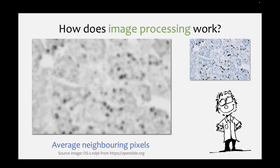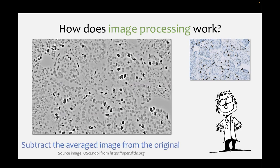This is an example of image processing because an image goes in, you do something to it, and an image comes out the other end. In this case, all we did was average - just additions and multiplications, so it's simple arithmetic - but it's fundamentally transformed the image. Having done that, what if we were to then subtract that image from the one we had before? Again, it's just arithmetic, but we subtract the corresponding pixel values.